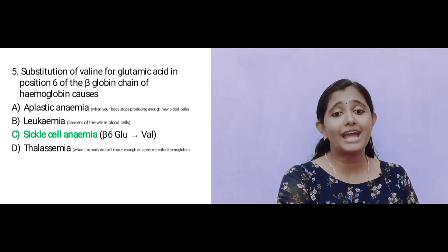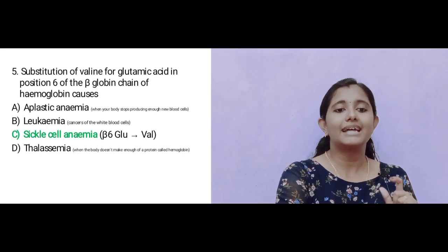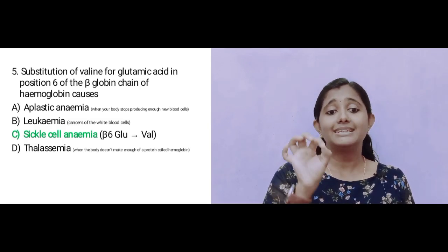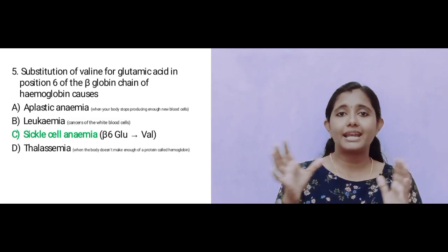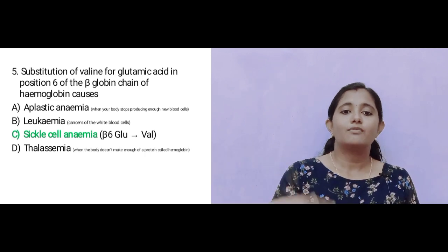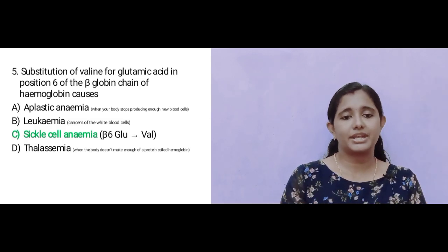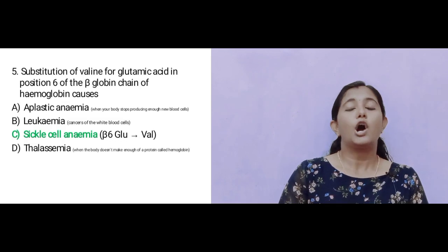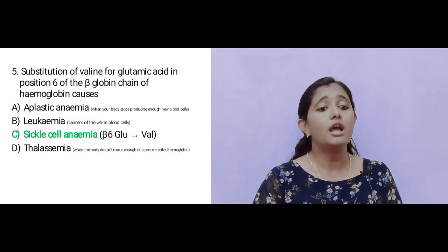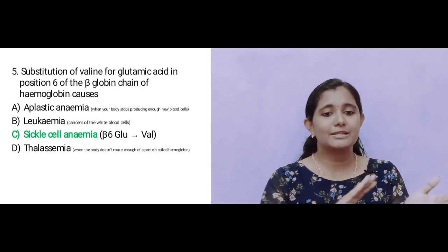Question number 5: Substitution of valine for glutamic acid at position 6 of the beta-globin chain of hemoglobin causes — Option A: Aplastic Anemia; Option B: Leukemia; Option C: Sickle Cell Anemia; Option D: Thalassemia.